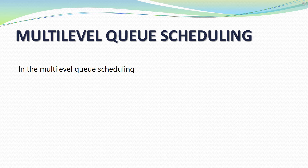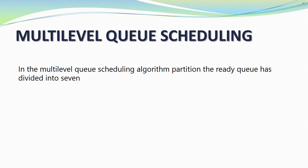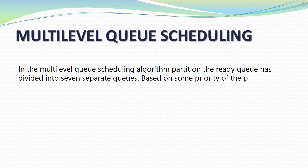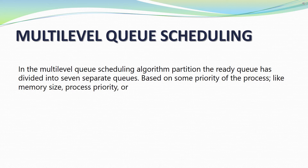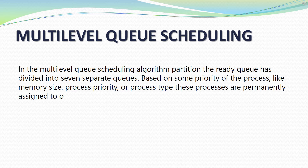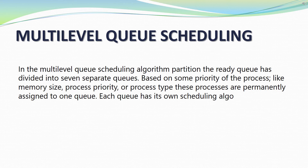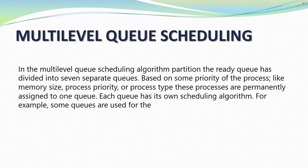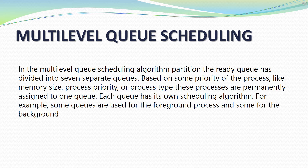Now what is multi-level queue scheduling? In the multi-level queue scheduling algorithm, the ready queue is divided into separate queues. Based on some priority of the process, like some memory size, process priority, or process type, these processes are permanently assigned to one queue. Each queue has its own scheduling algorithm.